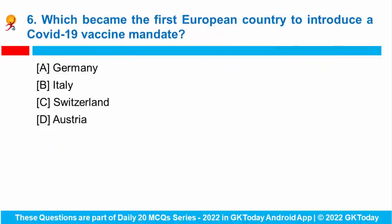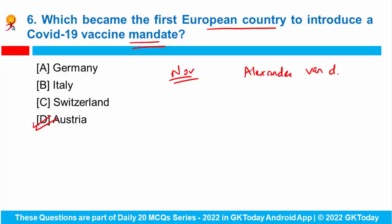Question number six: which became the first European country to introduce a COVID-19 vaccine mandate? Austria became the first European country to introduce a COVID-19 vaccine mandate. This law, first introduced in November last year, came into effect recently. President Alexander Van der Bellen gave his assent to the law, making it compulsory for adults to vaccinate against COVID-19. As per the law, everyone in the country must have an active vaccination status by 15th of March 2022.